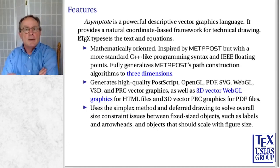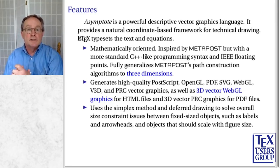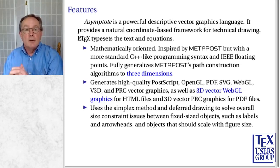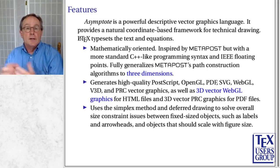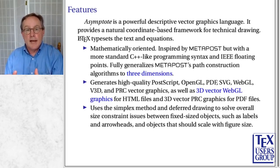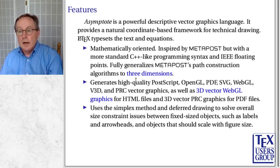One thing I like about Asymptote is that it recognizes a problem I've had many times. You have a figure, you need to scale it up to 1.1 times its current size, and when you do that, you realize you've also scaled up the letters — and you didn't want to do that. Asymptote has some sense that certain things are scalable and some things are not, and I think that's a big plus that makes a lot of my jobs much easier.